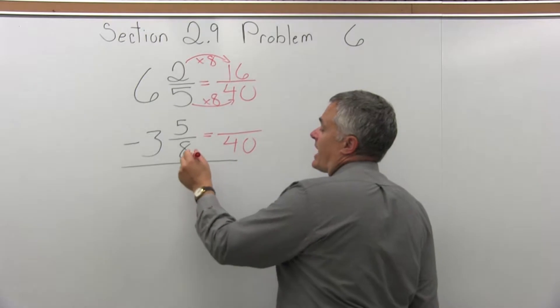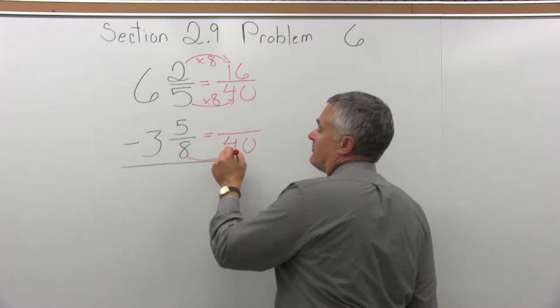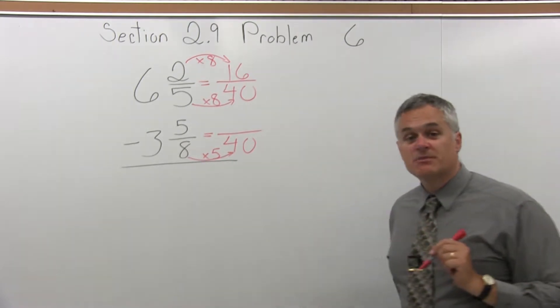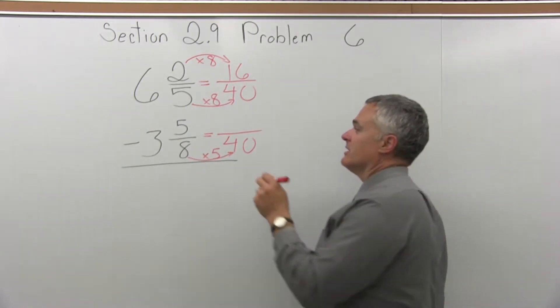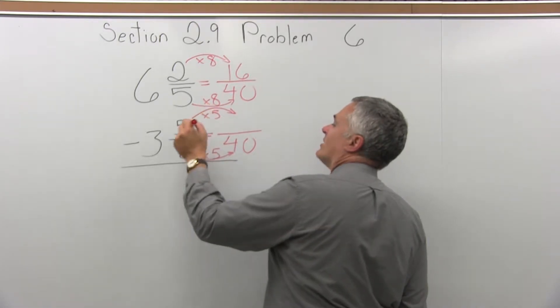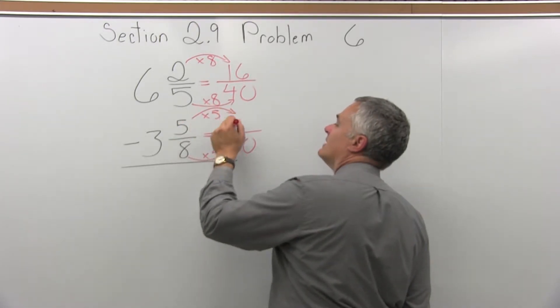Now for the lower fraction, the denominator times some value made 40, so 8 times something is 40, it must have been times 5. So the numerator gets multiplied times the same value, 5 times 5 is 25.